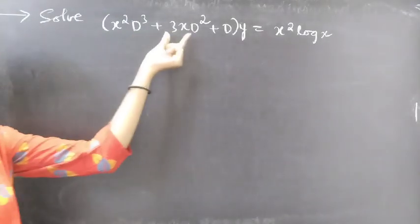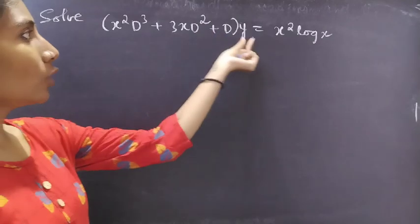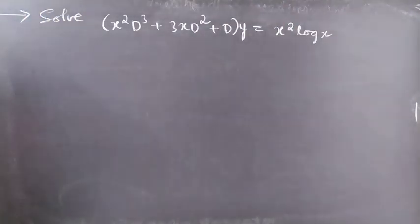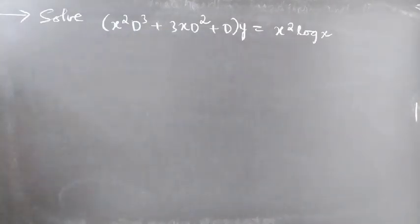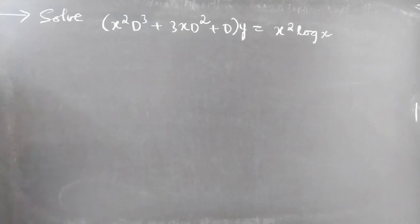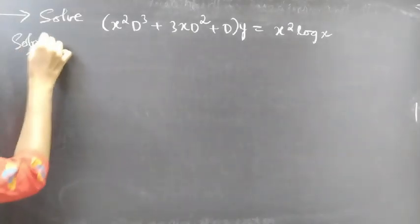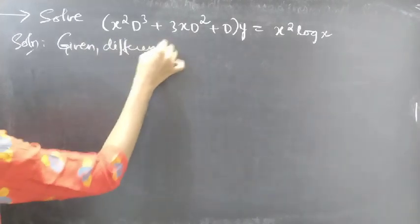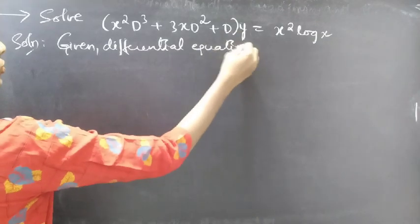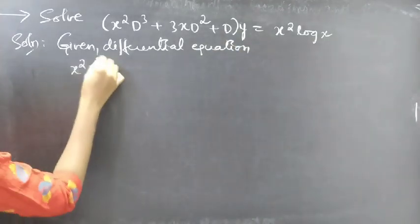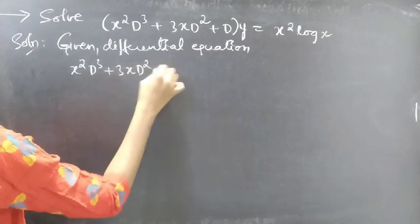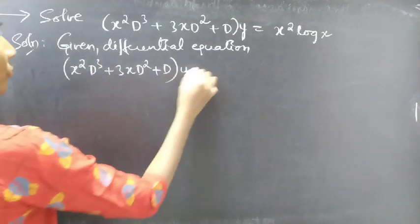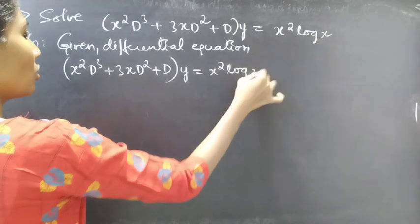Problem: solve x squared D cubed plus 3x D squared plus D into y equals x squared log x. So here we are having variable coefficients and we are going to reduce this to a higher order linear differential equation with constant coefficients by making some substitution.